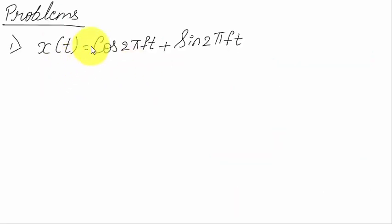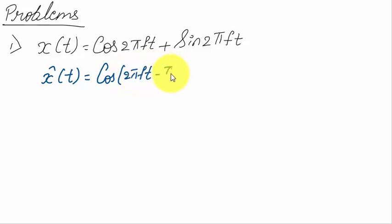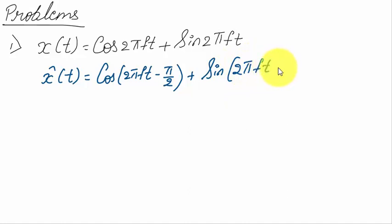Let us solve some problems based on Hilbert transform. Problem 1: given x(t) = cos(2πft) + sin(2πft), find the Hilbert transform x̂(t). For each and every signal component, you introduce a phase delay of 90 degrees, so x̂(t) = cos(2πft − 90°) + sin(2πft − 90°). This is how we define the Hilbert transform.